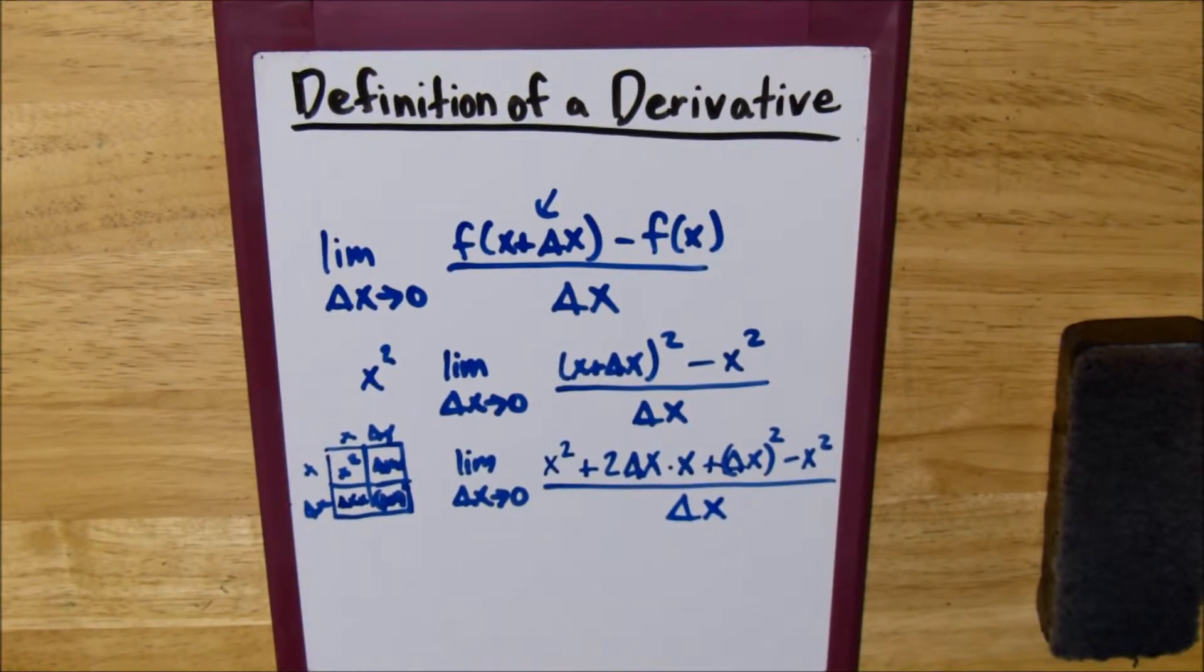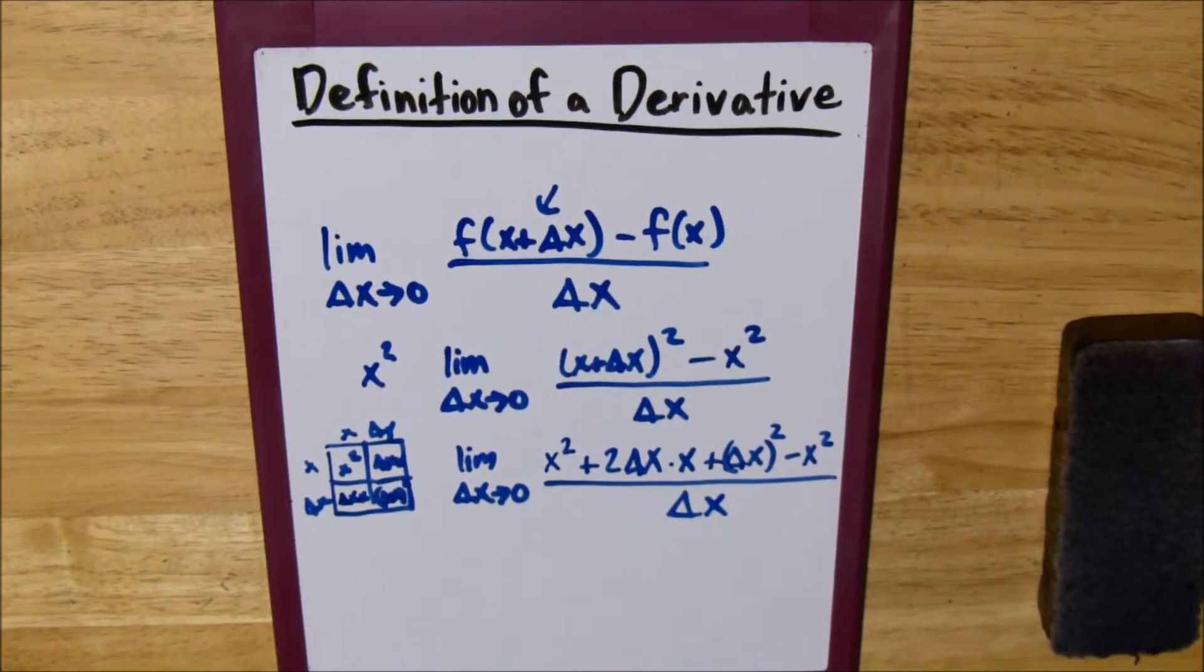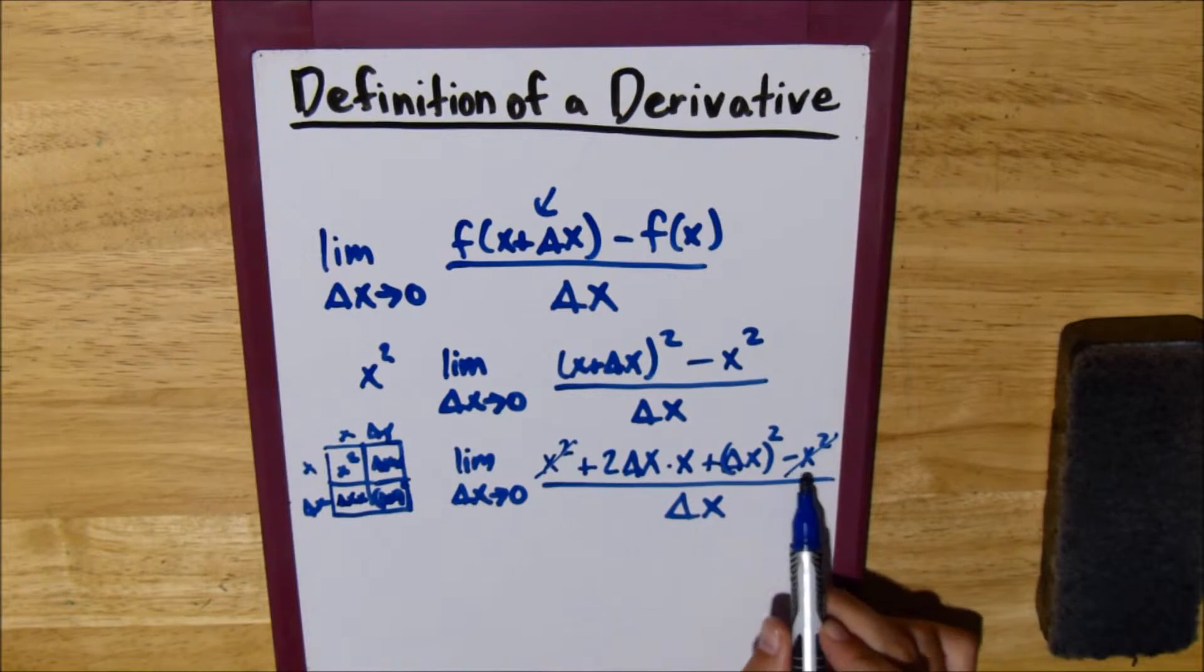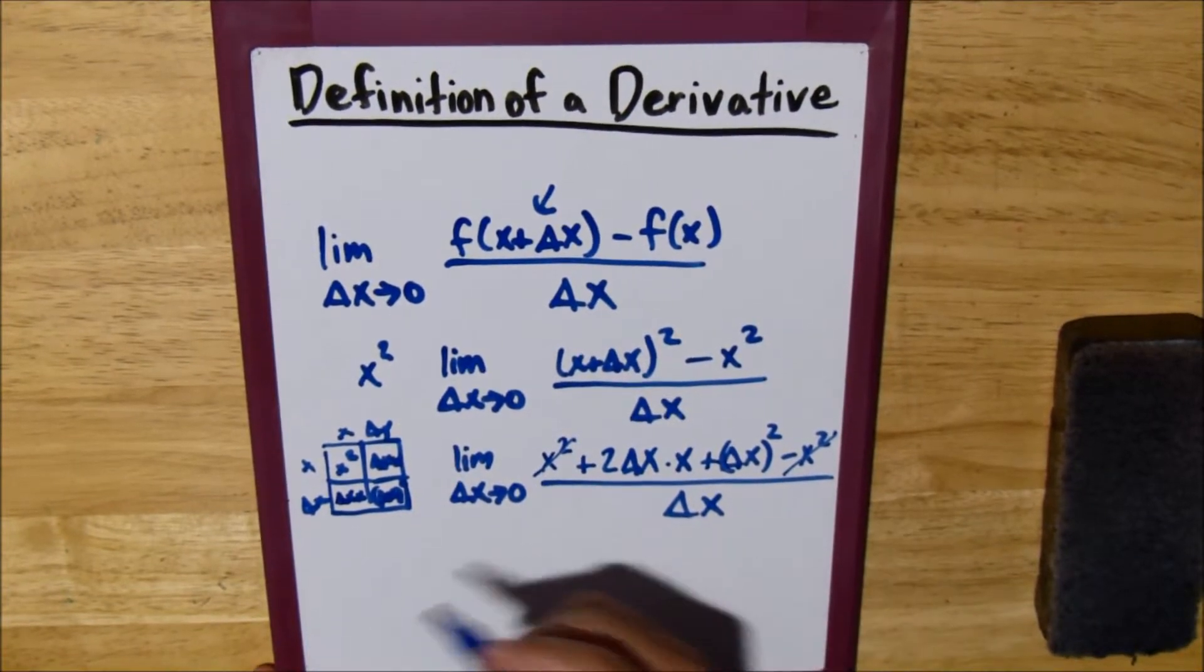Now, before we can factor out a delta x, I see two things in the numerator that we can cancel out, our x squared. So, x squared minus x squared is 0, so these just go away.